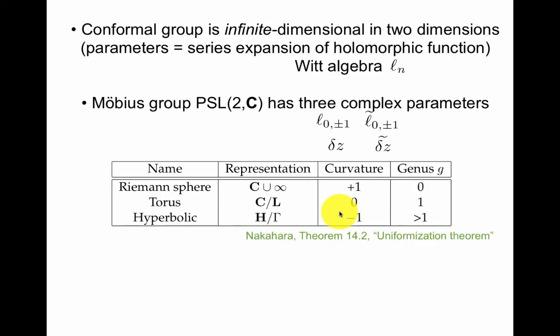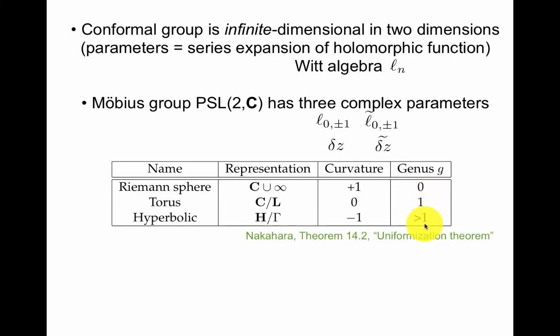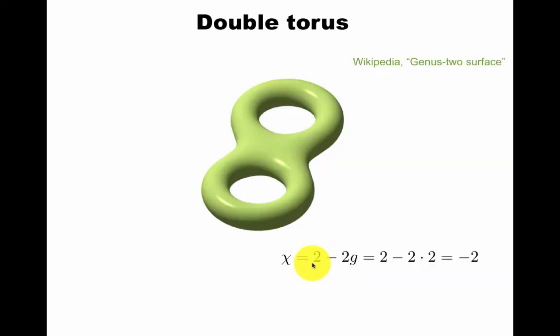Now there's an amazing result called the uniformization theorem, which is key in Riemann surface theory, that really there are only three classes of Riemann surfaces. There's the sphere, the torus that we talked about, and other. And we classify them by genus, which gives the number of handles. So sphere has no handle, torus has a handle, and then there are those that have more than one handle. This is not completely unique, we can also put marked points on them. This is a very important discussion, that marked points, in some sense, are on the same footing as transition functions.